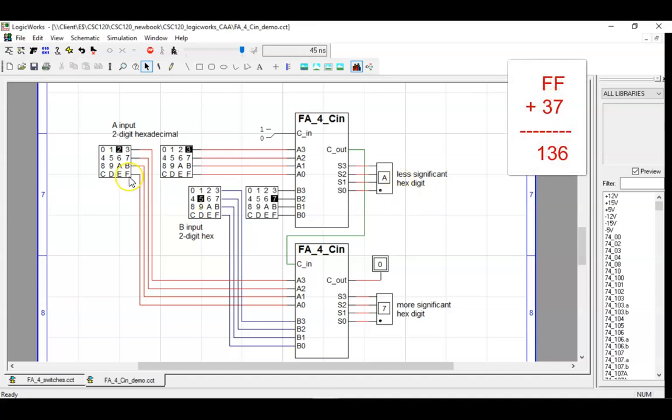As one final example, in hex, ff plus 37 equals 136. Note how the carry-out works as the most significant digit in the output.